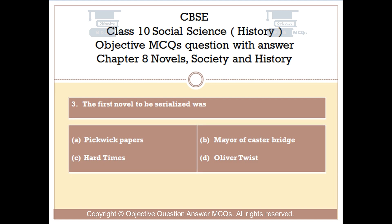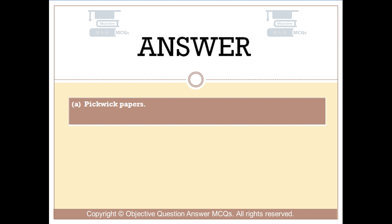Question number 3. The first novel to be serialized was: Option A: Pickwick Papers. Option B: Mayor of Casterbridge. Option C: Hard Times. Option D: Oliver Twist. The right answer is Option A — Pickwick Papers.